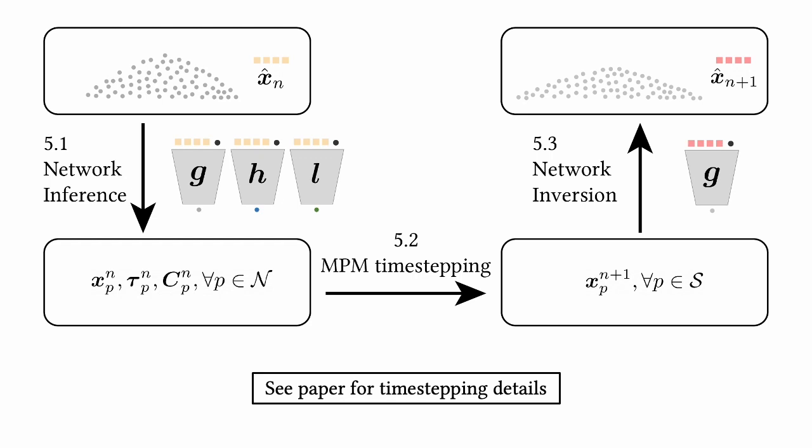To temporally evolve the latent space vector q: first, we inference the network; second, we temporally update the vector field via reduced MPM time-stepping; third, we invert the network. We showcase our model reduction approach on a variety of different elastic and plastic scenarios.